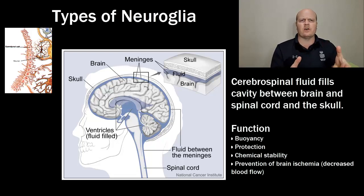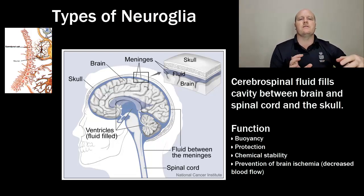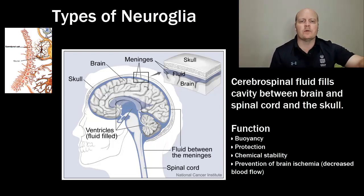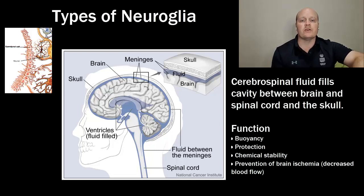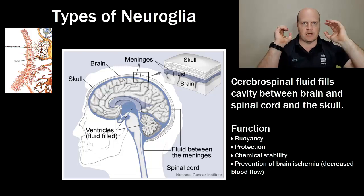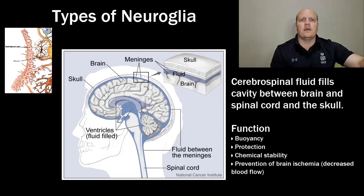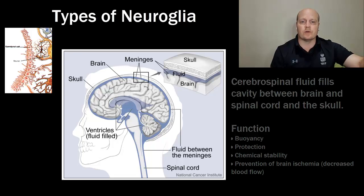Cerebrospinal fluid fills the cavity between the brain and spinal cord. It provides buoyancy so the central nervous system can float — the brain isn't resting on itself. It provides protection when we get hit and shaken. It provides chemical stability, and the CSF flows throughout the ventricular system of the brain and is absorbed back into the bloodstream, rinsing metabolic waste from the CNS. It also helps prevent brain ischemia: if there is swelling in the brain causing decreased blood flow and oxygen, decreasing CSF volume can accommodate that to stop pressure building up.